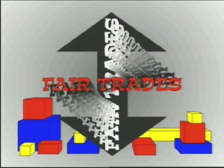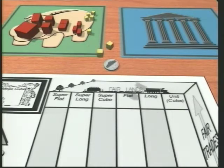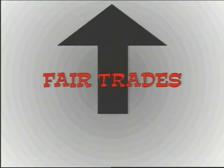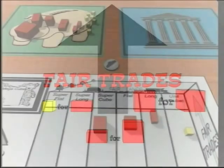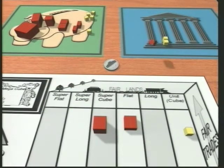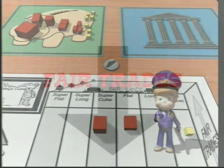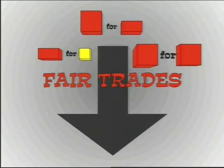Students learn two exchanging games: fair trades up and fair trades down. In fair trades up, unit cubes are added to the Fairlands game board, which is kept safe by trading up — little things for big things — unit cubes for longs, longs for flats, flats for supercubes, and so on. In fair trades down, the opposite is done: unit cubes are removed from the game board, requiring trading down — longs for unit cubes, flats for longs, supercubes for flats, and so on.